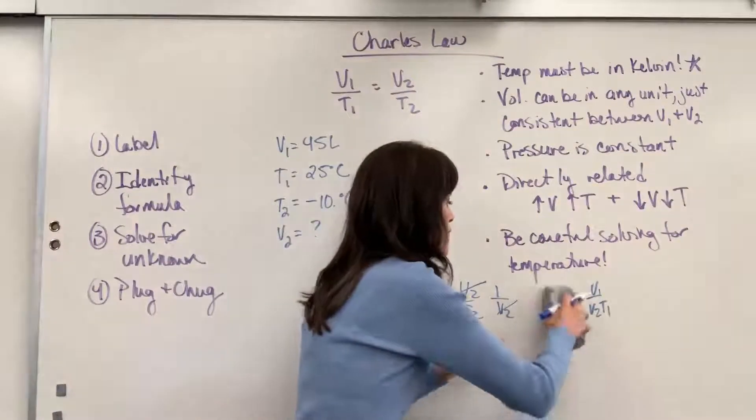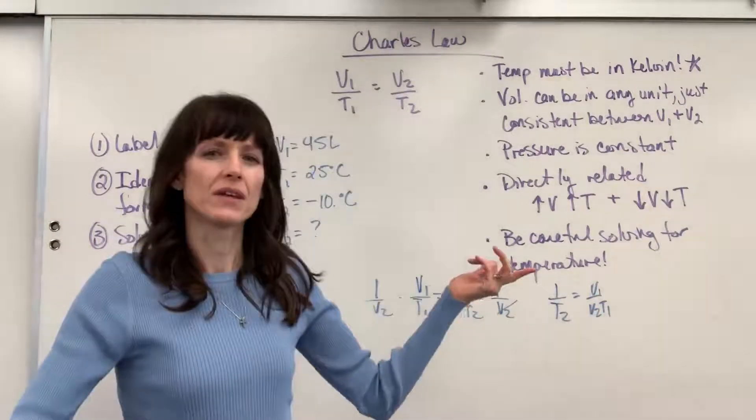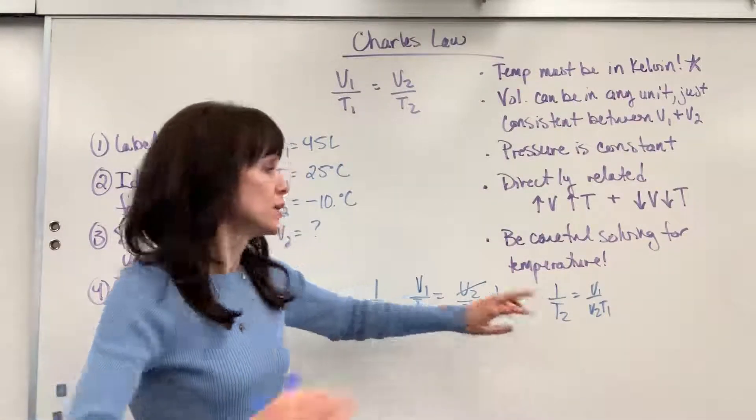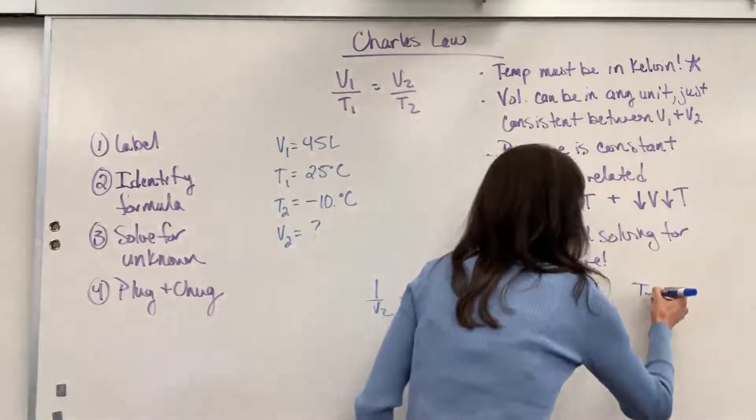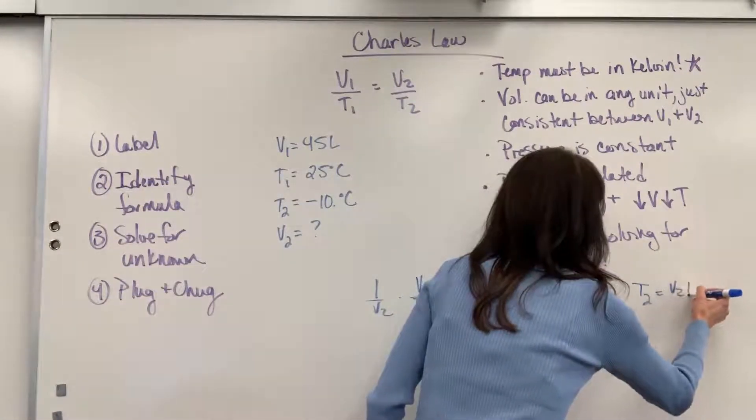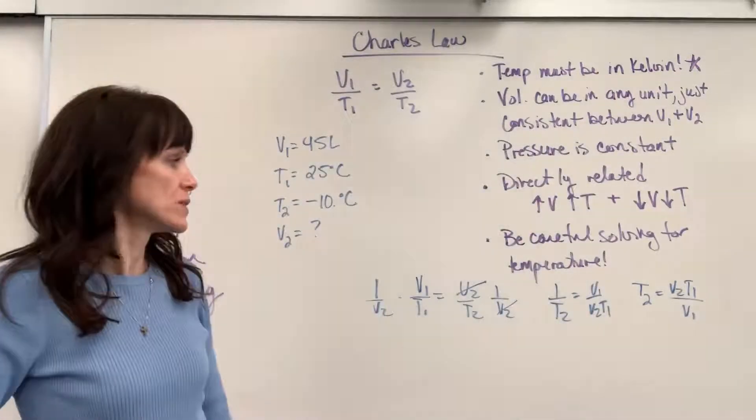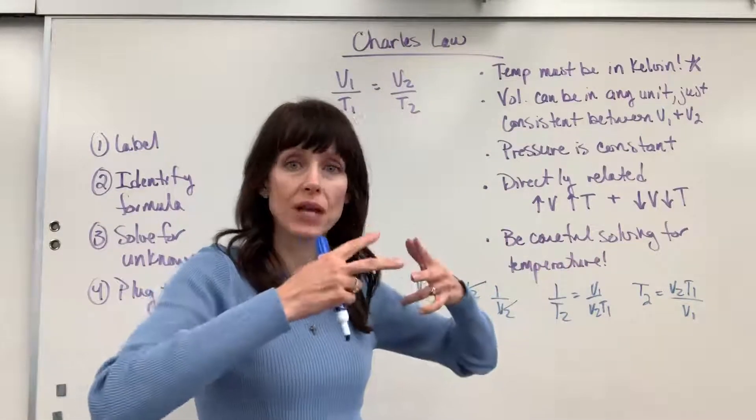Be really careful when you're solving for that T2. If you ever find yourself in this situation, do you remember from math, the easy way to fix that, you've got to get the T2 in the numerator. You just reciprocate both. You'll end up with T2 equals V2 over T1 divided by V1. So if you ever end up with what you're looking for in the denominator, just reciprocate both sides.